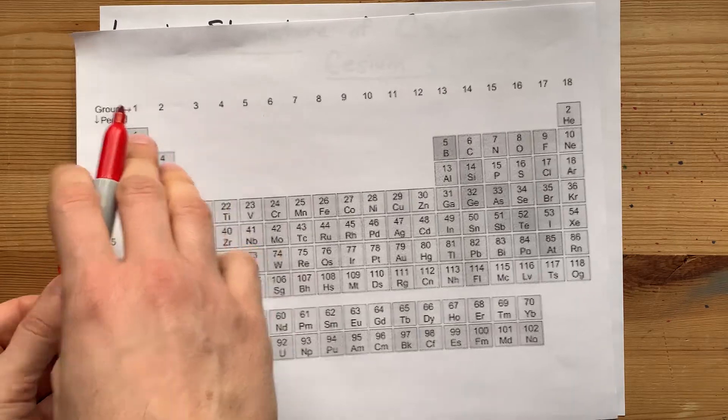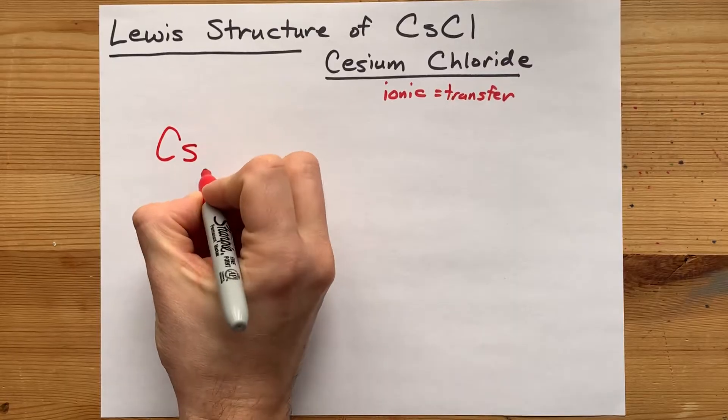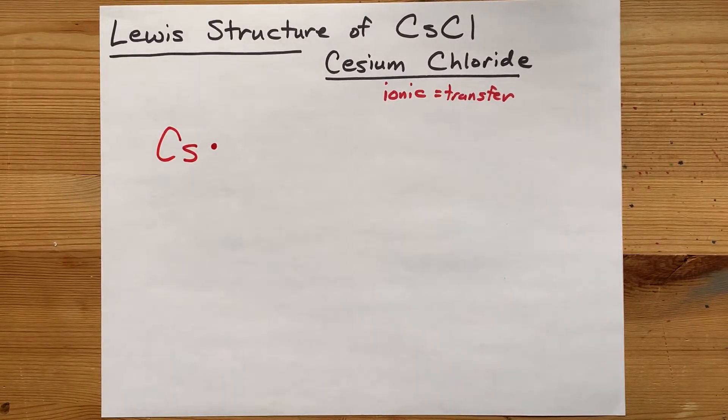Cesium in group one has one valence electron. Let me draw that here for you. There's the cesium atom and there's the one valence electron, the one electron in its outer shell.